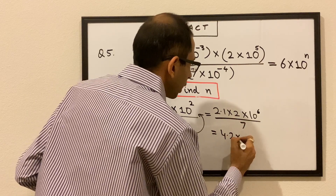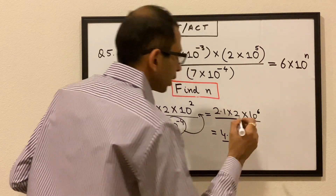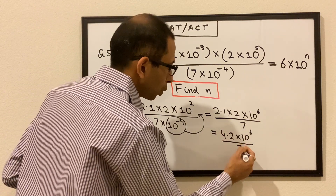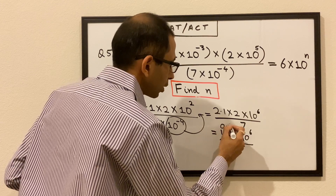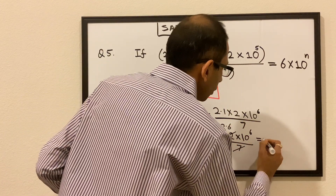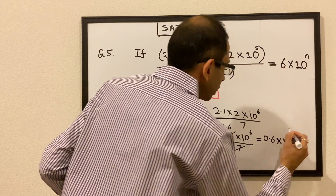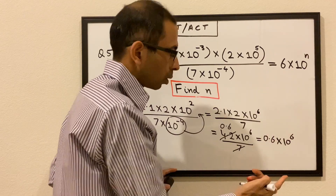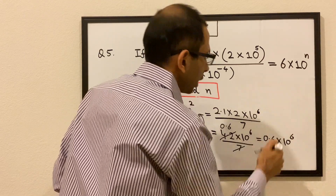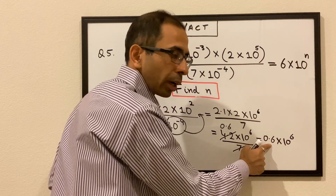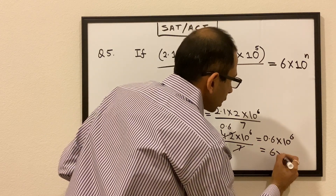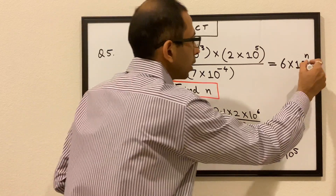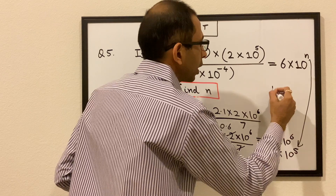Now 2.1 times 2 is 4.2, so we have 4.2 times 10^6 divided by 7. Since 4.2 divided by 7 is 0.6, we get 0.6 times 10^6. Converting to match the right side: 0.6 times 10^6 equals 6 times 10^5. Comparing with 6 times 10^n, the value of n is 5.